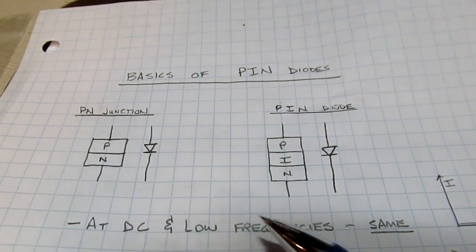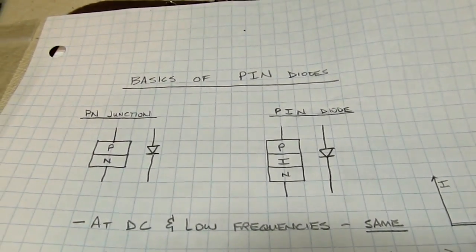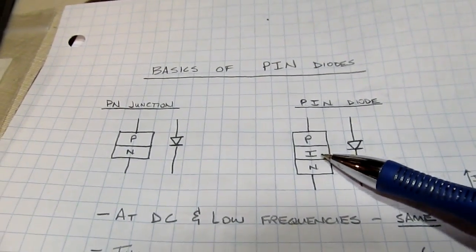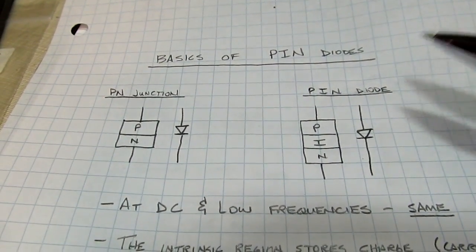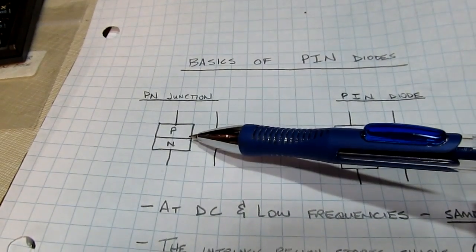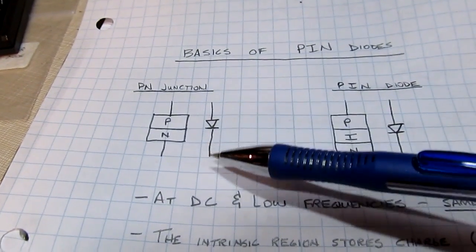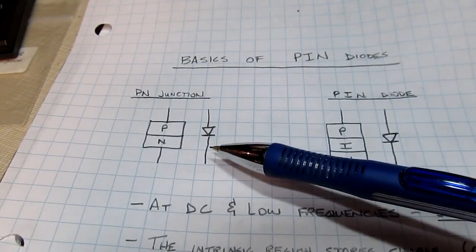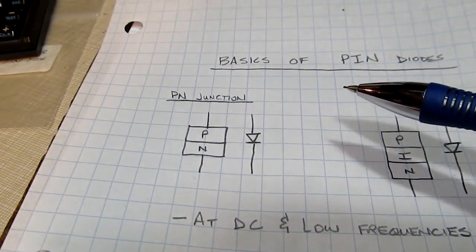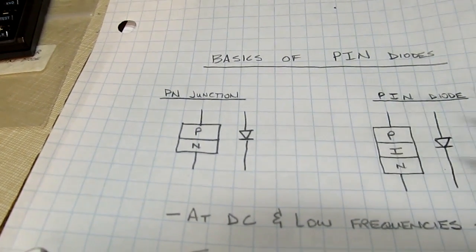At DC and low frequencies these two diodes behave the same - they have the same IV characteristic. But adding the intrinsic region means it stores charge when under forward bias, like a big bucket of stored charge. Any PN junction when turned on has charge built up at the junction, and when you reverse bias it you have to remove that charge before the junction turns off. This is called the reverse recovery time.